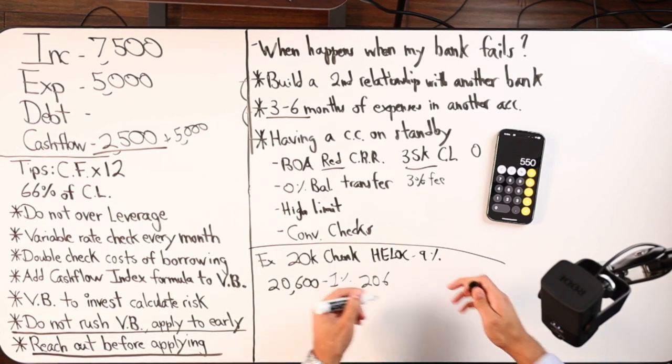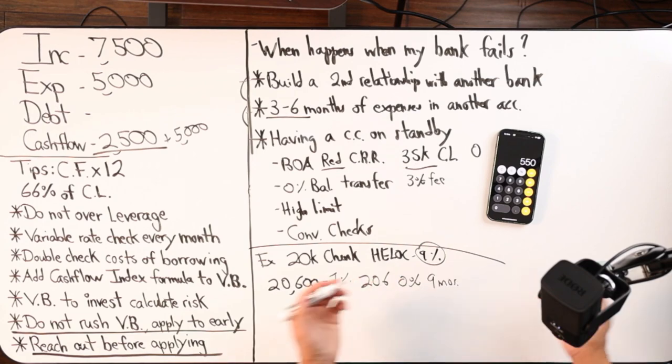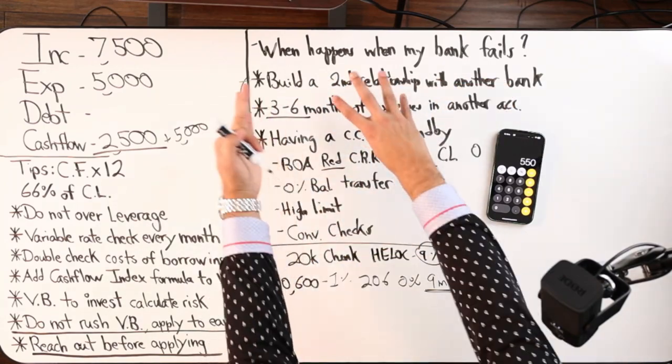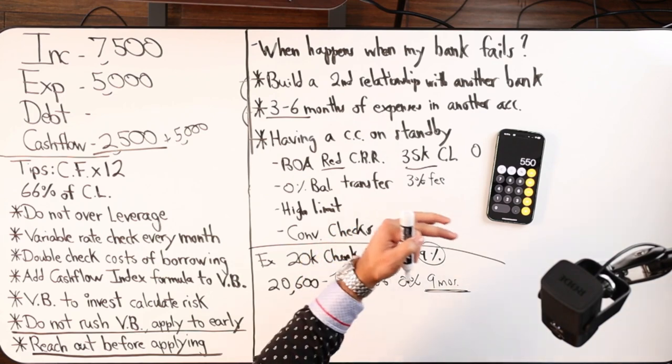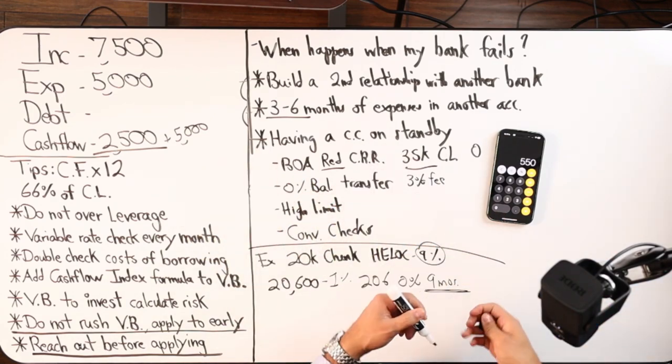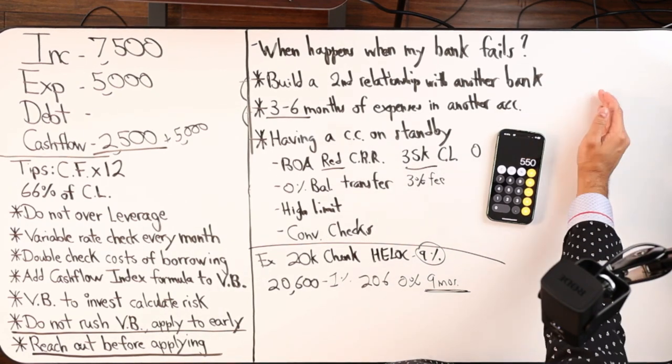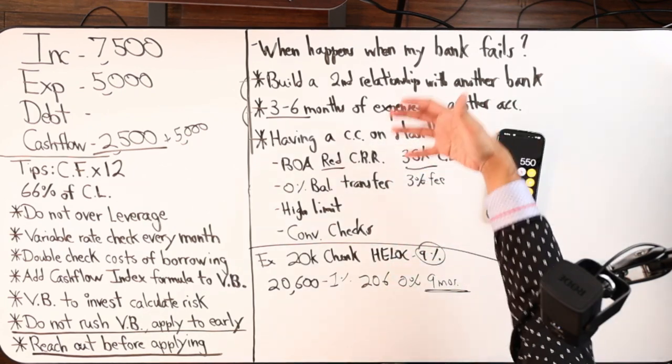And I just moved nine percent to zero for about nine months to buy some time. And in those nine months I'm going to go to my second relationship with another bank and move my banking over, move my credit, move my paychecks, all that stuff—move it all over—and then probably apply for a HELOC there to get it back up and running again. That would be my move.